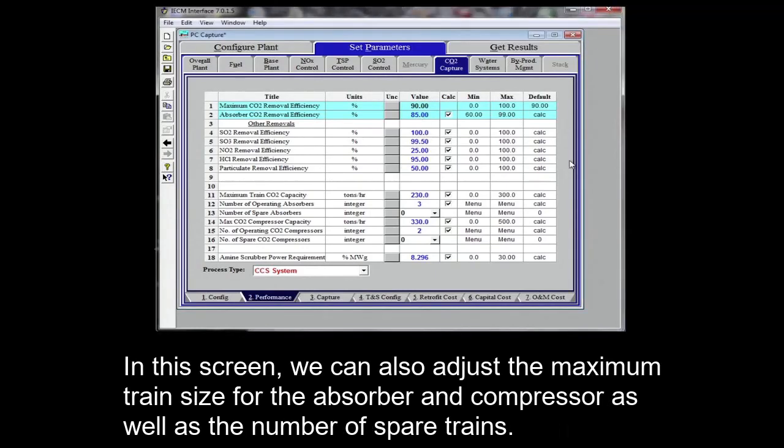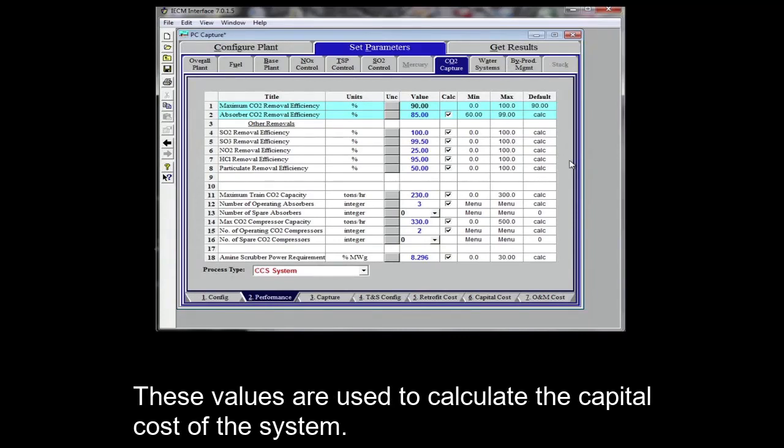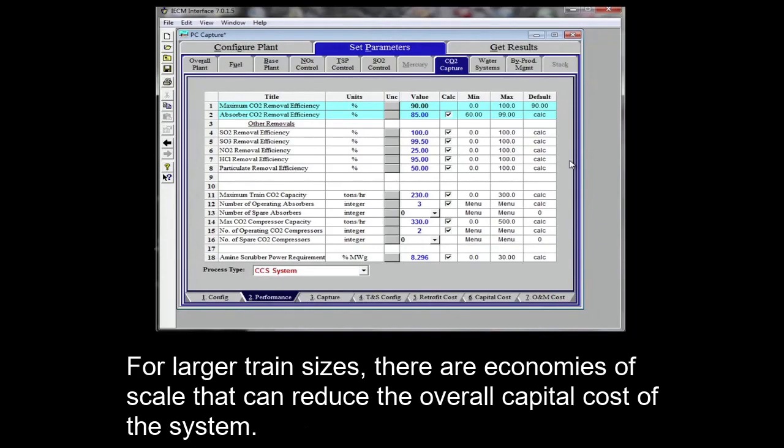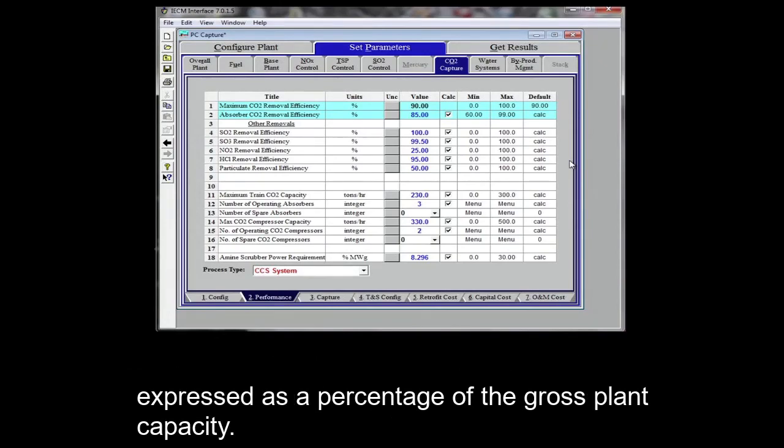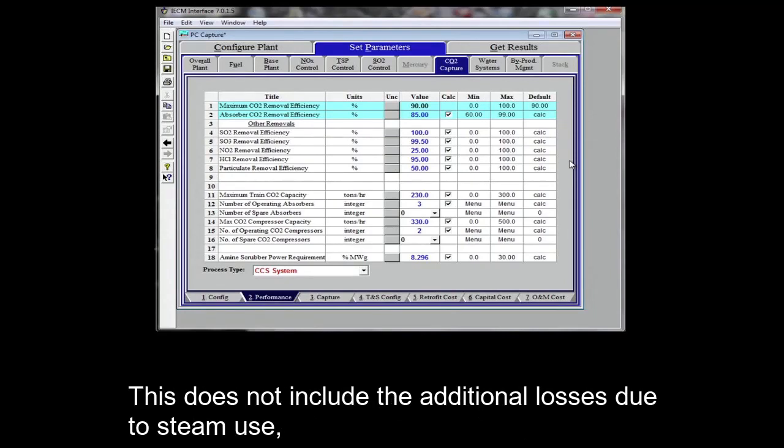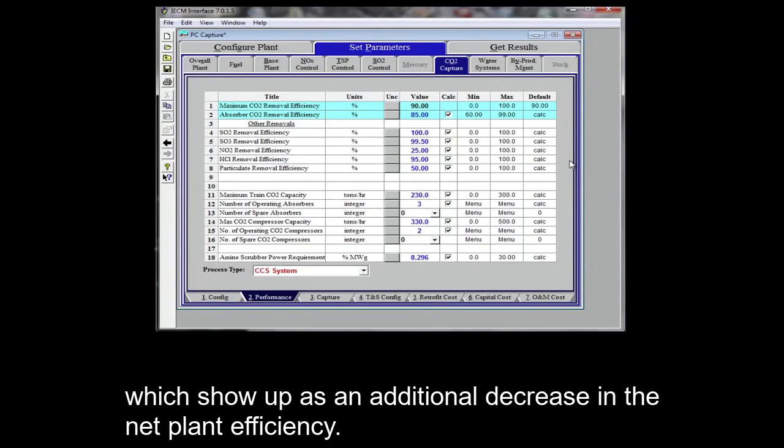In this screen, we can also adjust the maximum train size for the absorber and compressor, as well as the number of spare trains. These values are used to calculate the capital cost of the system. For larger train sizes, there are economies of scale that can reduce the overall capital costs of the system. The final line on this screen is the electrical power requirement of the system, expressed as percentage of the gross plant capacity. This does not include the additional losses due to steam use, which show up as an additional decrease in the net plant efficiency.